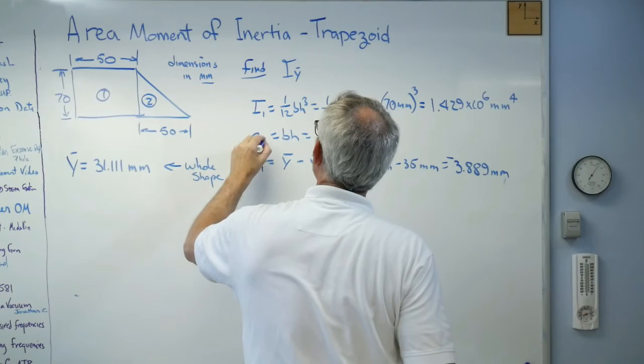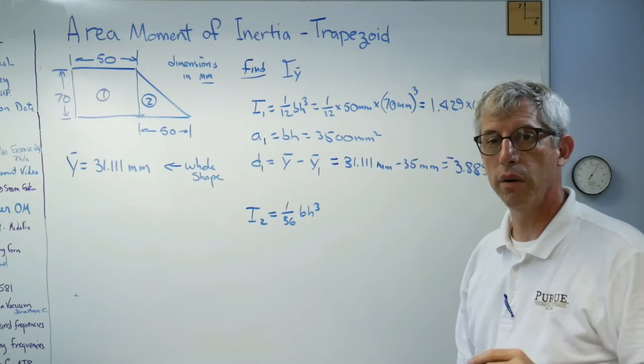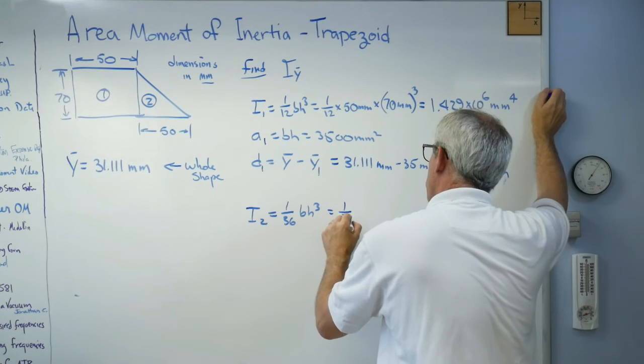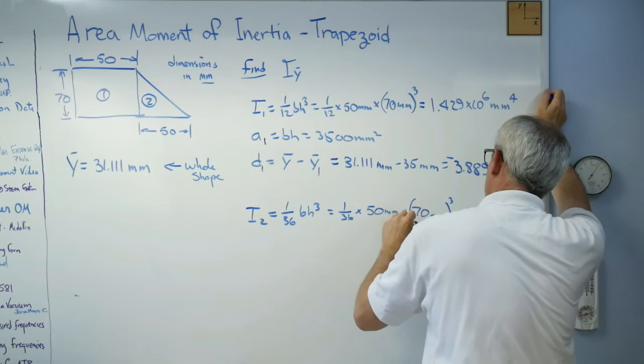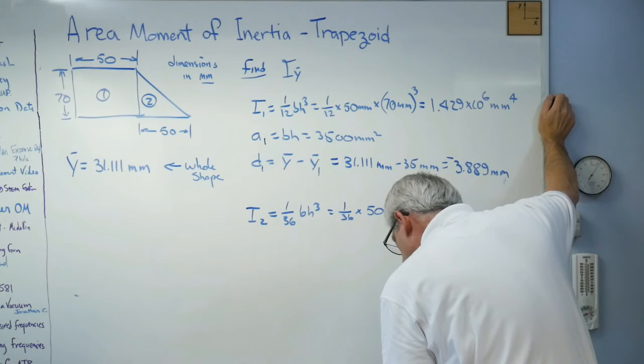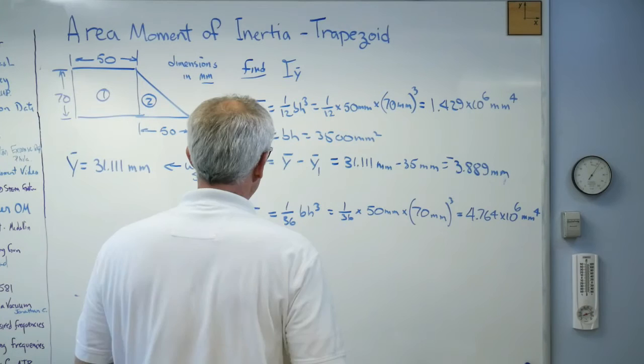So, there's everything for... whoops. Sorry, I did that wrong, guys. Apologize. There you go. 1/36 bh cubed. Now, the area moment of inertia of a triangle is 1/36 bh cubed. So, that's 1/36 times, let's see, that's going to be 50 millimeters times the height is also 70 millimeters cubed. And that turns out to be, let me make sure I get this right, 4.764 times 10 to the 6 millimeters. Oh, almost ran out of board. There you go. All right, so there's that calculation.